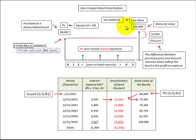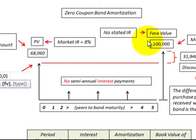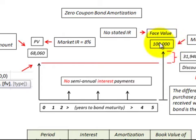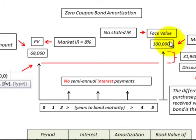In this presentation we're going to review zero coupon bonds and how we calculate their interest and how we'd record them on our financial statements. Let's look at a cash flow diagram on a zero coupon bond. It has a face value or maturity value of $100,000 out in the future. This is a five year bond, so five years in the future the bond holder would receive $100,000 if they held it to its maturity date.